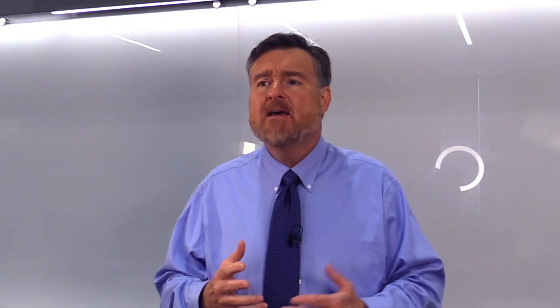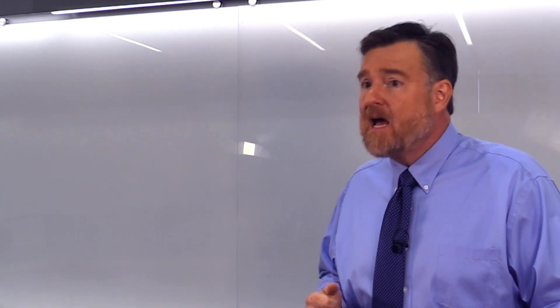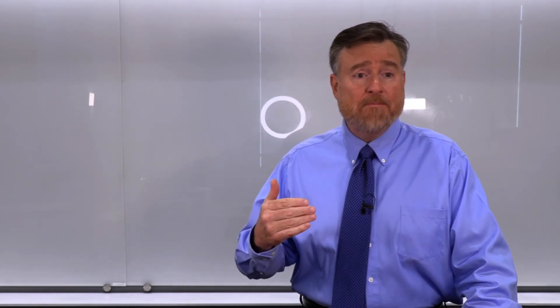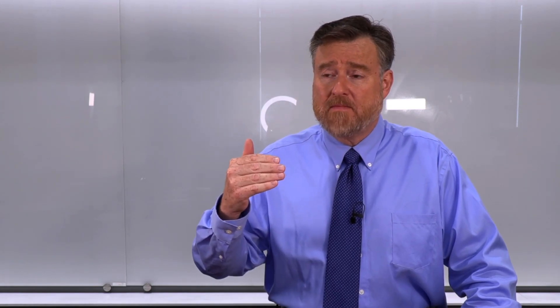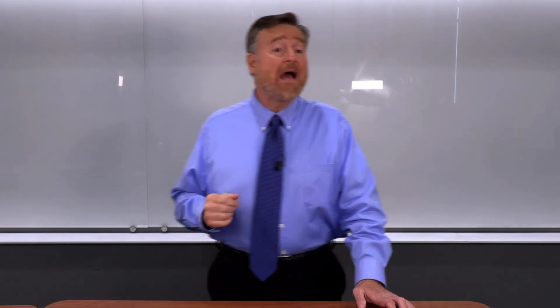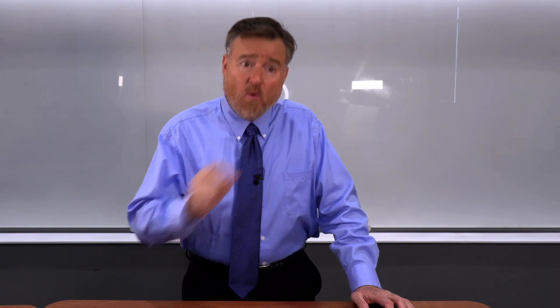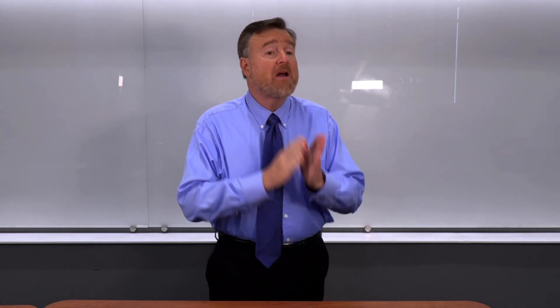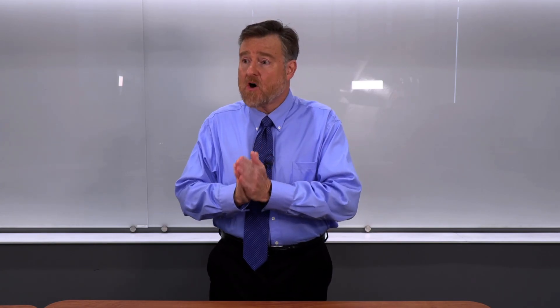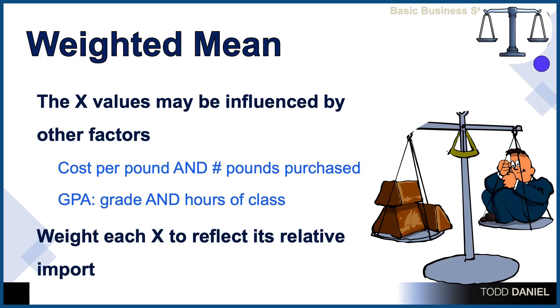A second time when we want to use something different than a mean would be if I was asking you how much you spend on average for gasoline. We know that gasoline prices fluctuate. Gas prices go up and then they go up and then up again. Therefore, if I wanted to know how much you have spent on gasoline over the last two months, I need to know not only how many gallons you purchased but also how much each gallon cost. And so for that, I'm going to use a weighted mean — a weighted mean includes additional influences on the overall cost as part of the calculus.